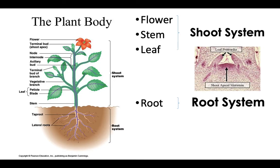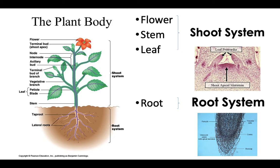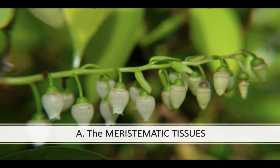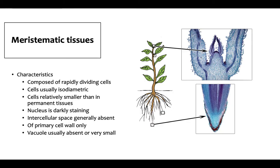The division of the shoot apical meristem produces the shoot system, while the division of the root apical meristem forms the root system. The meristematic tissue is composed of rapidly or actively dividing cells. Their shape is mostly isodiametric, spherical, or polyhedral — notably smaller than cells in permanent tissue — with a darkly staining nucleus. Their intercellular space is generally absent or tightly packed. They are characterized by a primary cell wall, and their vacuoles are very small or sometimes absent.